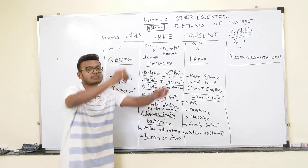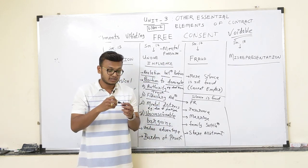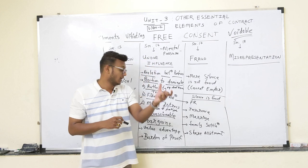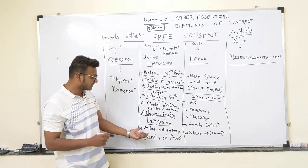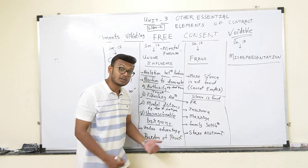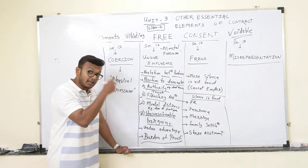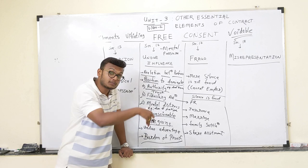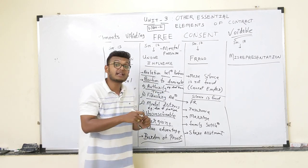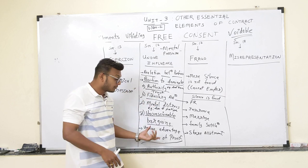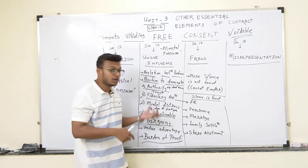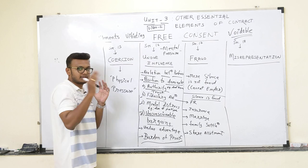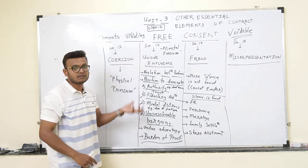Next: unconscionable bargains, found in money lending — when money lenders give loans at a very high rate and get unfair advantage. Next: undue advantage — unfair dealing. Very important: burden of proof. If the matter goes to court, the burden of proof is on the person doing the undue influence, to tell the court that he has not done this. So: coercion is physical pressure and undue influence is mental pressure.